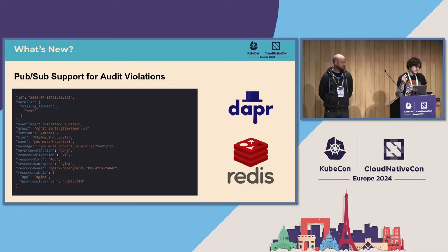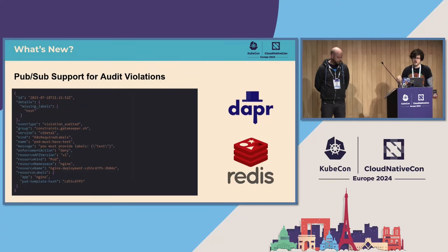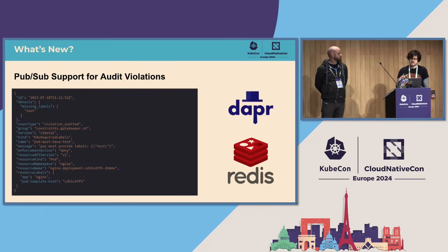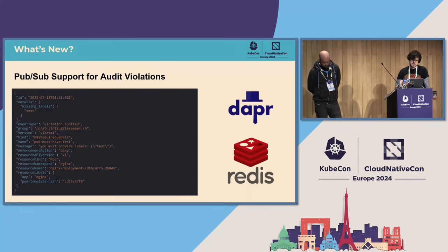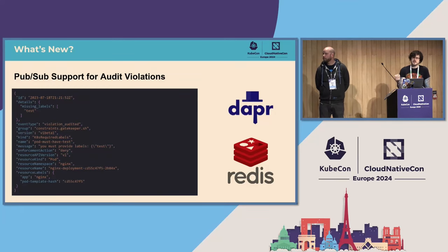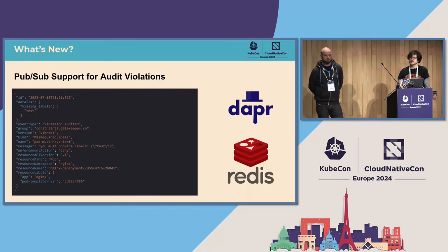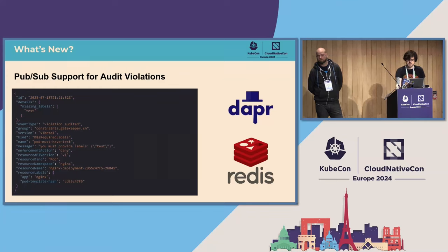This approach has introduced some challenges. When storing all audit violations on the status of constraints, folks running large multi-tenant clusters start to hit etcd limits and performance implications. So one of the newer features that launched is pub/sub support for audit violations. The driver currently supported is Dapr backed by Redis. This makes it much more possible to tie into whatever other systems you're using — you can subscribe to a topic on Redis and follow up with whatever additional automation you have in place.